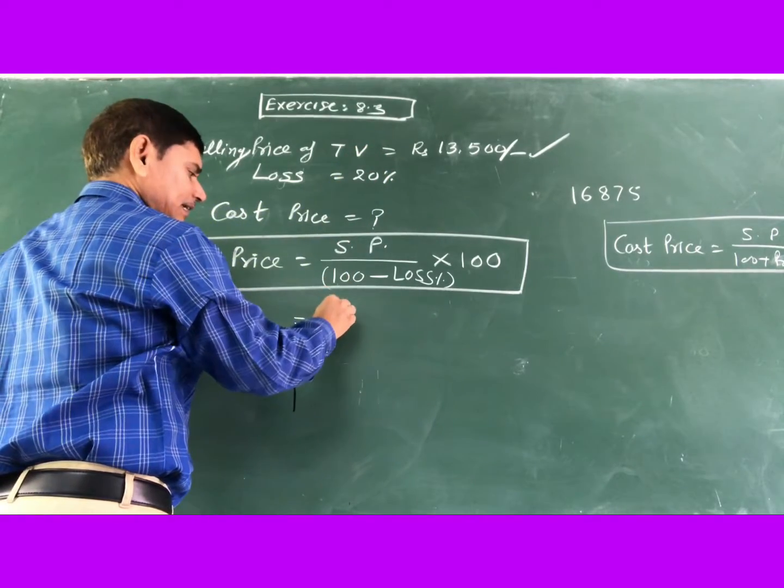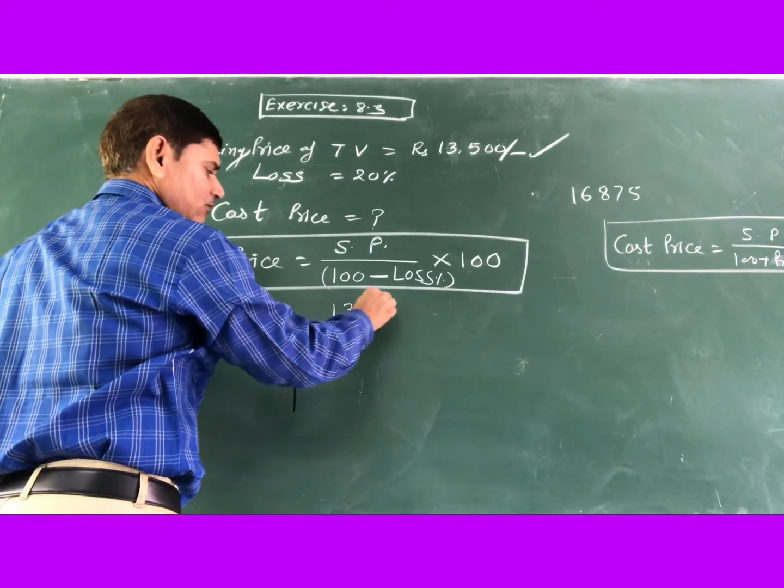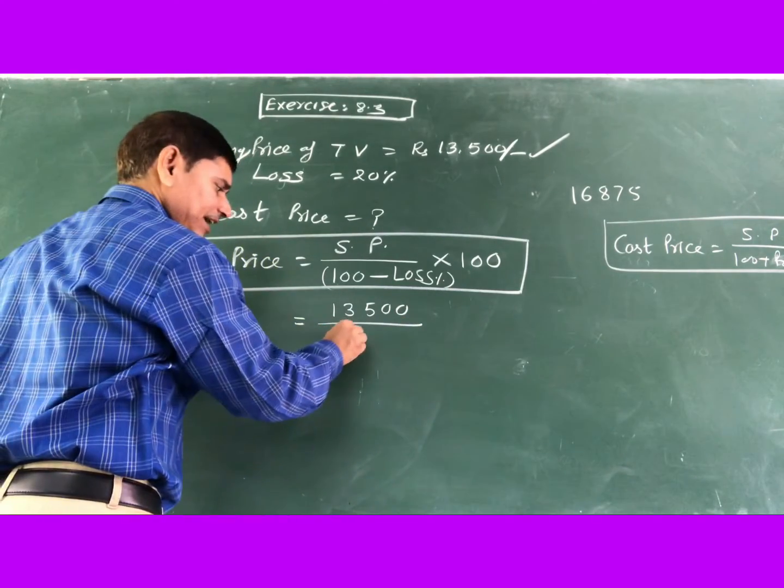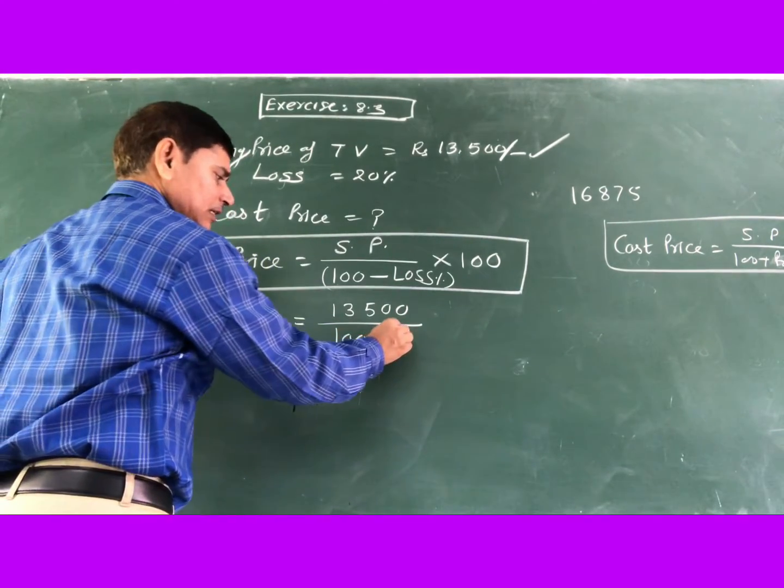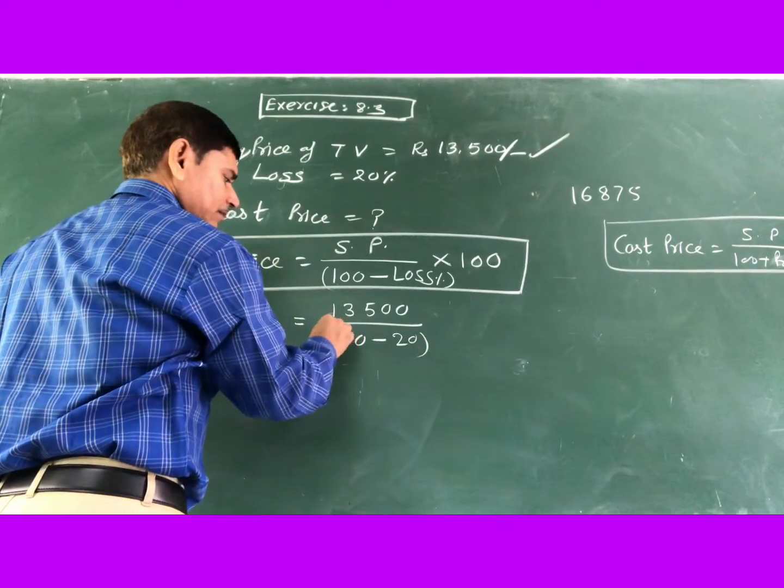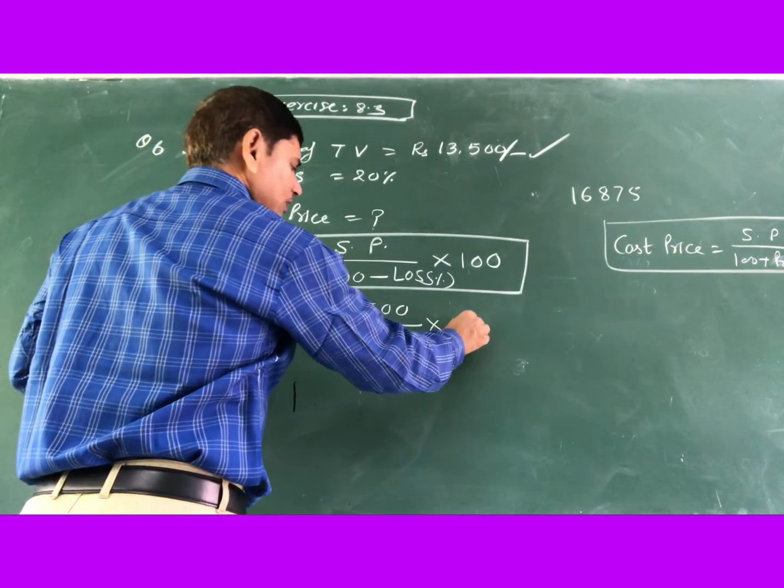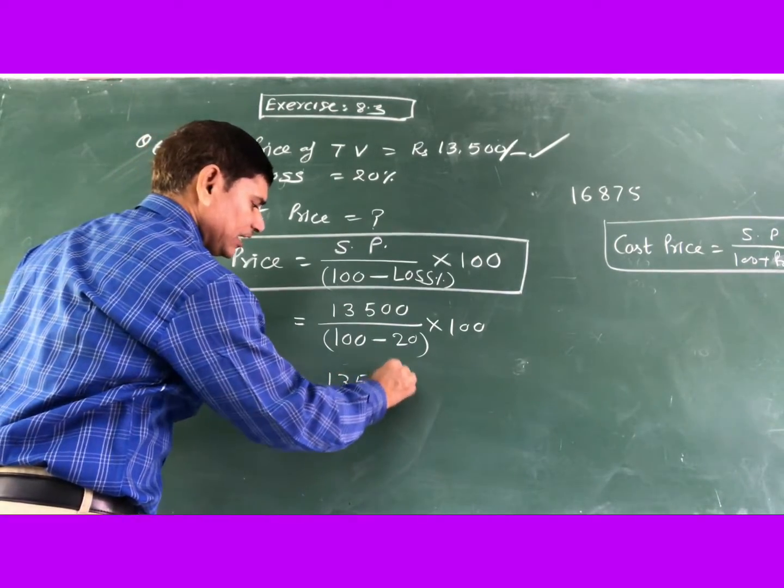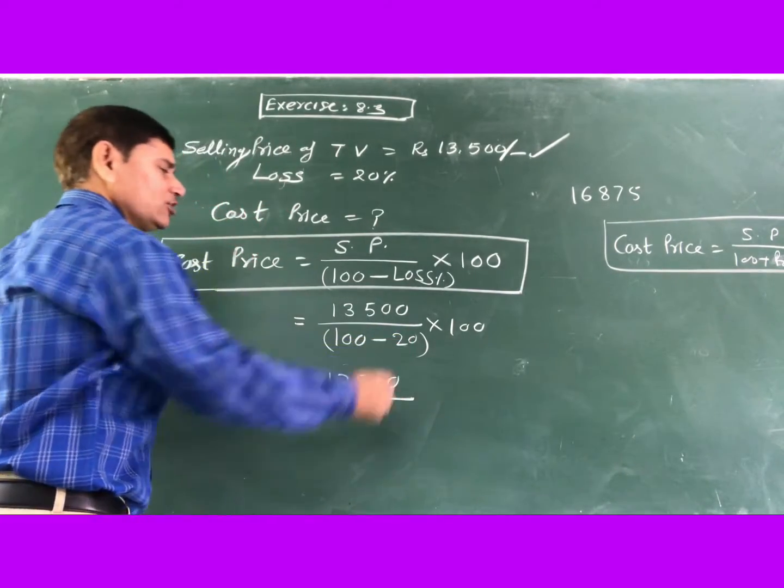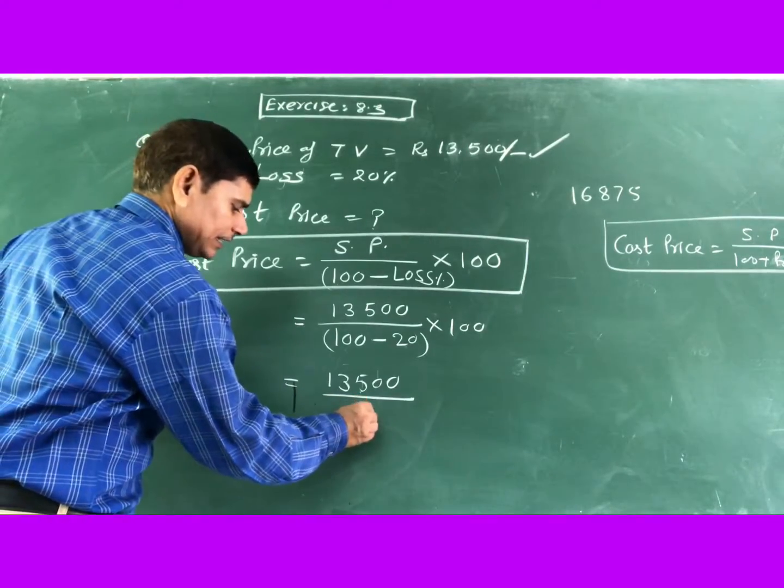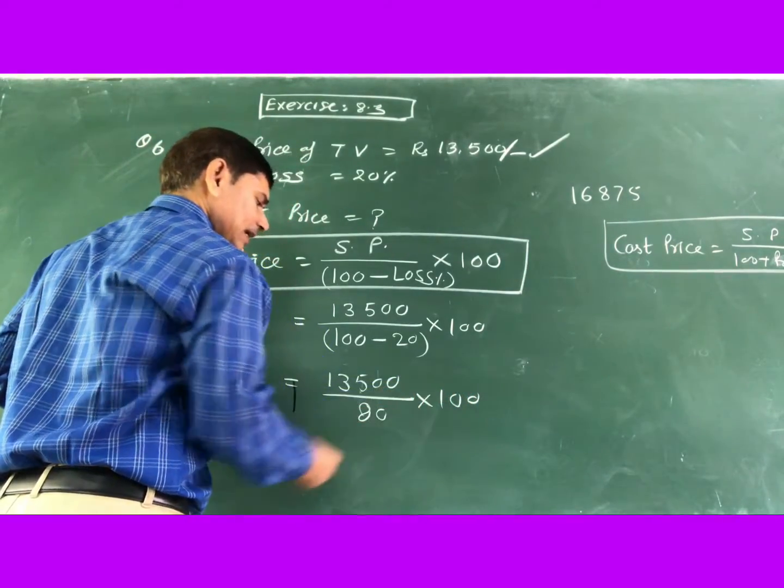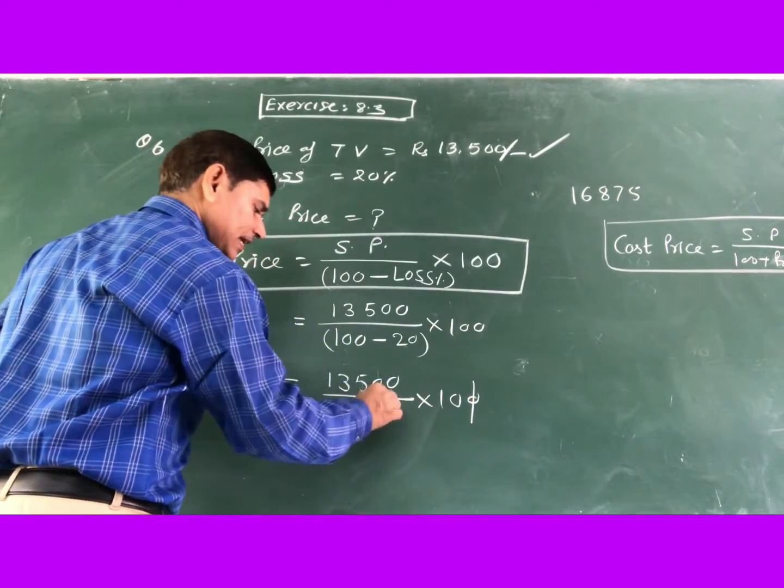So you will write selling price 13,500 divided by 100 minus how much loss? 20, and multiply by 100. So you will get 13,500 divided by 100 minus 20, which is 80, multiply by 100. You can cancel out one zero, this zero is cancelled out.